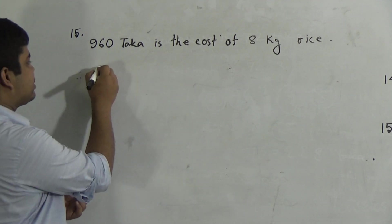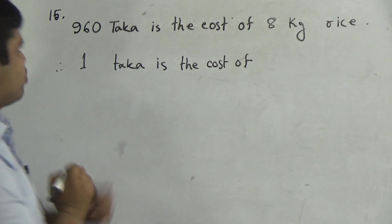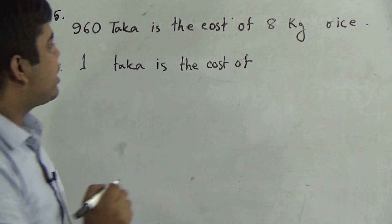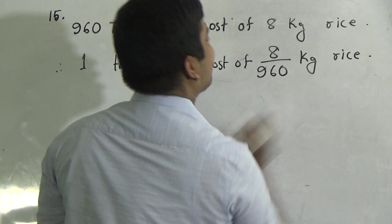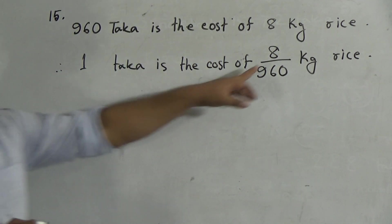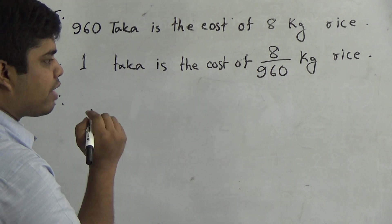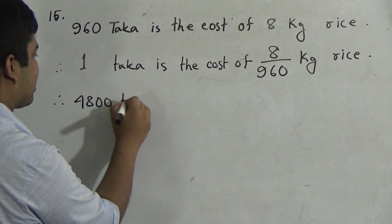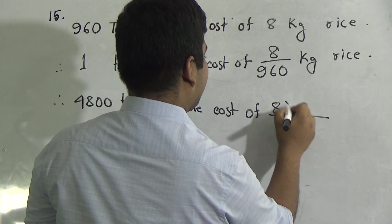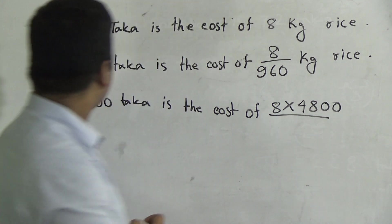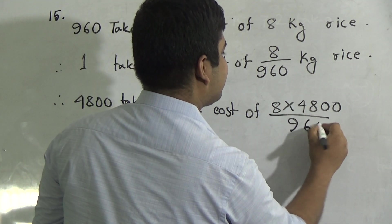Write first 15 number question. 960 taka is the cost of 8 kg rice. Then 1 taka is the cost of... We shall find 1 taka is the cost of, 1 is less than 960, so we can do division here. That means 8 divided by 960 kg rice. I hope you have understood. Now this is the sign of division also, 8 divided by 960. Now we need to find out that 4800 taka is the cost of 8 multiplied by 4800. Why? Because we know that 4800 taka is greater than 1, so we do multiplication.